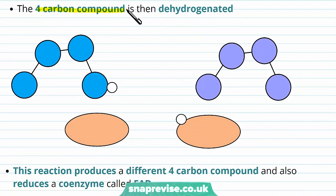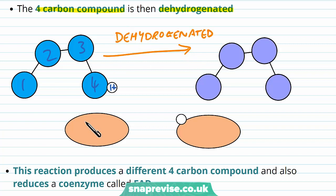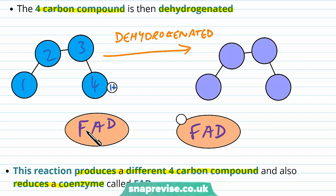The next thing to happen to the four-carbon compound is that it's dehydrogenated. It's lost the coenzyme A because that was only a temporary binding, but this four-carbon compound next has a hydrogen atom removed. We've been talking about how usually it's NAD that takes the hydrogen, but this particular step of the Krebs cycle produces a different four-carbon compound and also reduces a different coenzyme called FAD. So this time we have FAD rather than NAD — they're very similar in structure, but this stage uses FAD as the coenzyme. We now have formed reduced FAD and the new four-carbon compound.